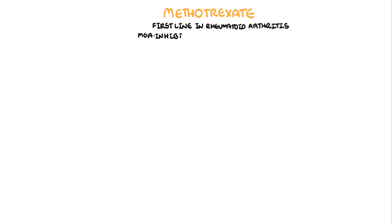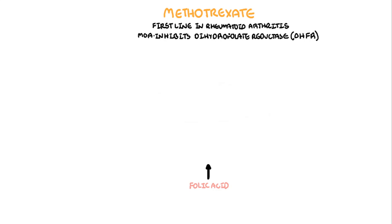Methotrexate is a folic acid analogue and works by inhibiting dihydrofolate reductase, which is an important enzyme in the synthesis of nucleotides. Folic acid from our diet is converted to dihydrofolate and through dihydrofolate reductase becomes tetrahydrofolate.